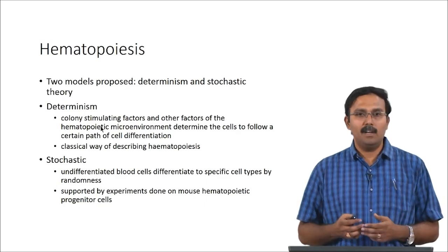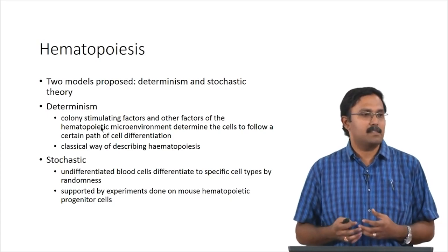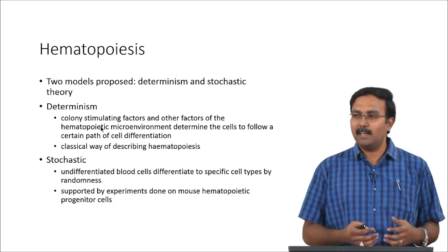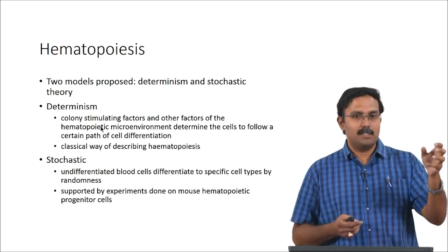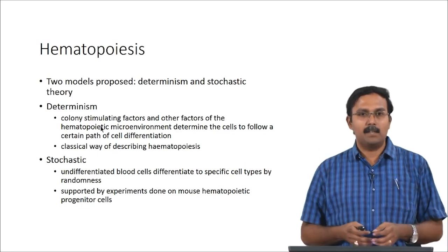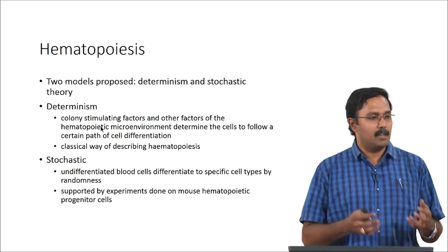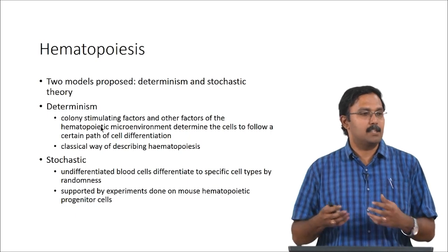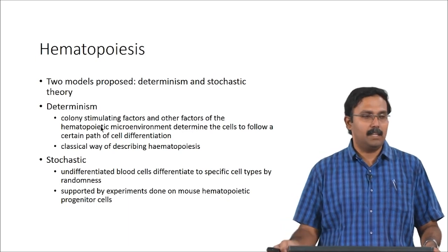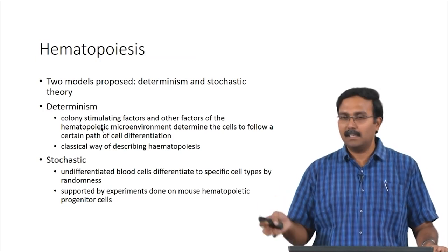Hematopoiesis can actually be modeled, and there are two theories: a deterministic model and a stochastic model. The deterministic model is the classical way of describing hematopoiesis — the environment provides particular conditions and the cell goes into a particular pathway. There is no real randomness; it just depends on colony stimulating factors and other factors present in the microenvironment, which determine the path for cell differentiation. This is what has always been believed — the classical pathway.